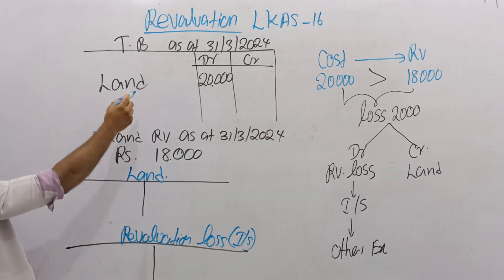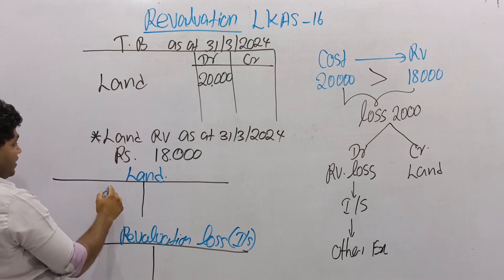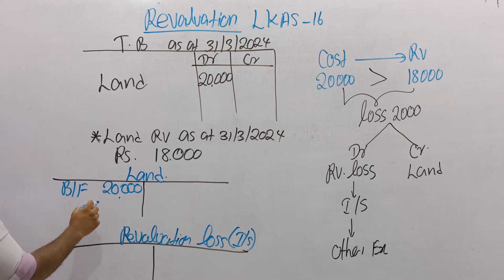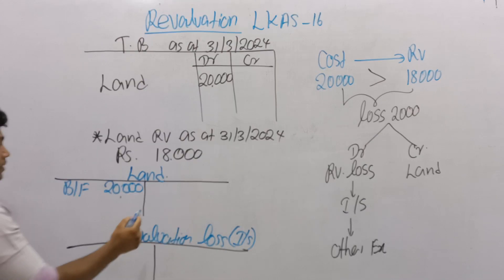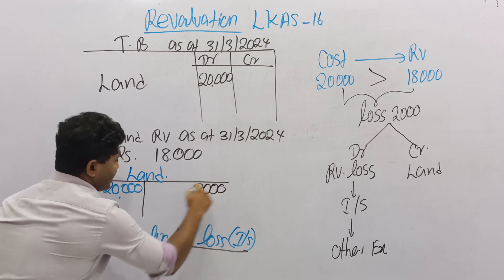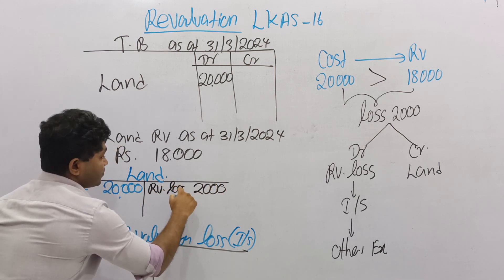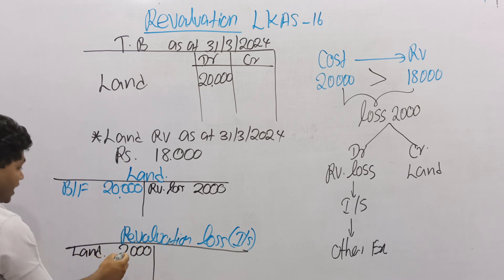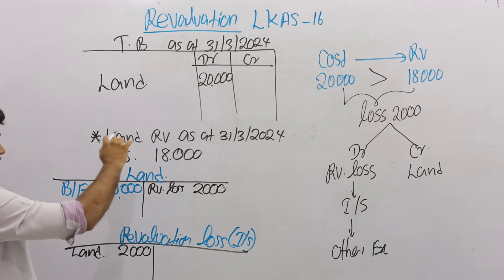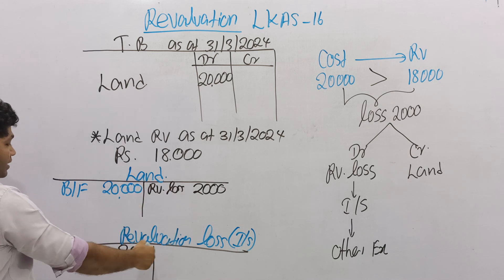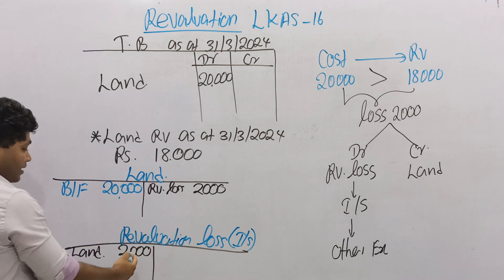First, take the balances available in the Trial Balance. The balance given is 20,000 on the asset debit side brought forward. If land decreases by 2,000, then land account is credited 2,000. Double entry: land account credit 2,000 as revaluation loss, and revaluation loss account debit 2,000. Revaluation loss should be recorded in the income statement as an expense. If there is a profit, land account is debited and revaluation reserves account is credited. But if there is a loss, land account is credited, revaluation loss account is debited, and that value should be recorded under other expenses in the income statement.